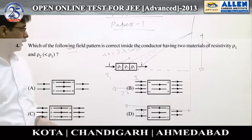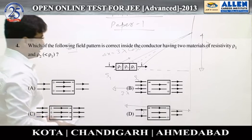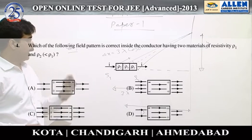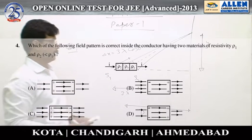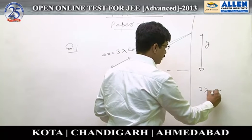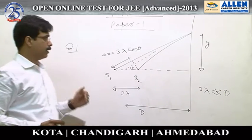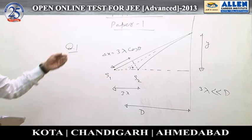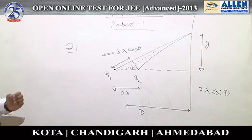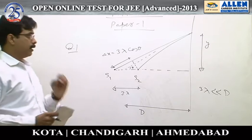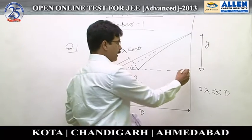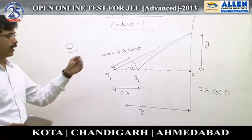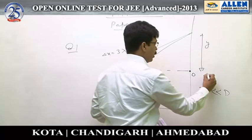Paper one, question number one. In this question, the screen is perpendicular to the line joining sources S1 and S2. Since it is given that 3λ is far less than capital D, the path difference at the screen is 3λcosθ. The maximum possible path difference that can be created is at point O, that is 3λ.